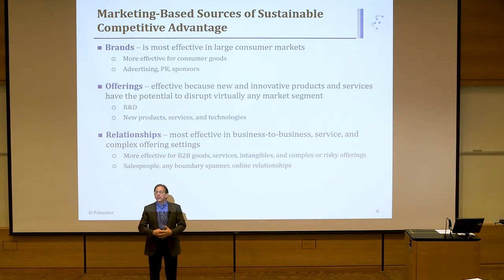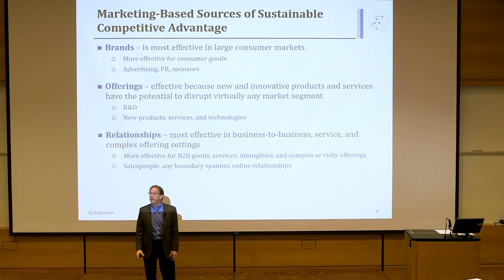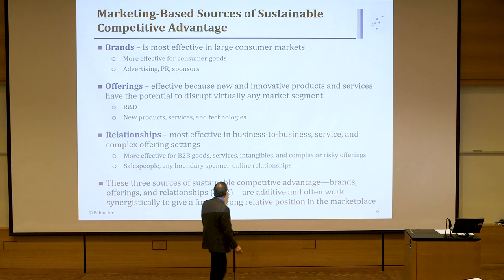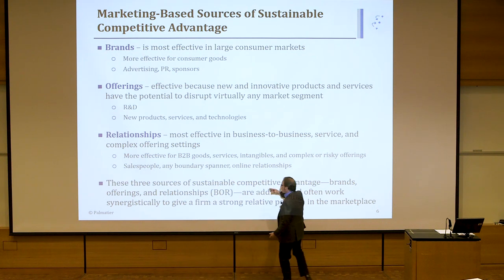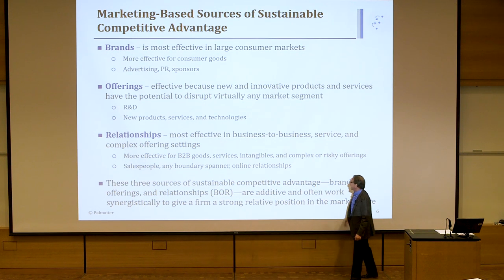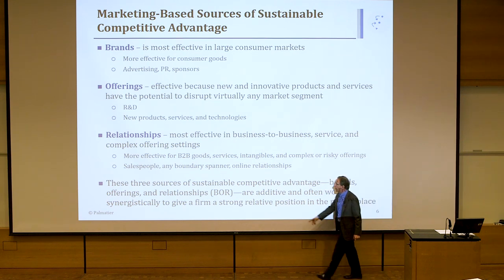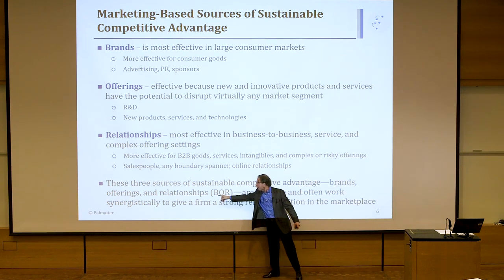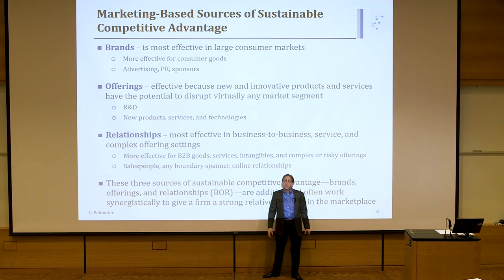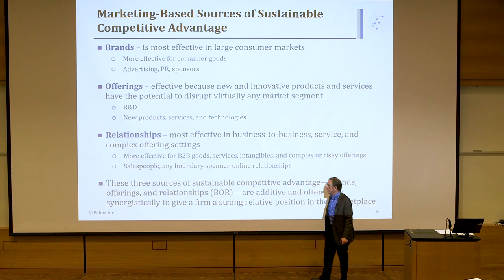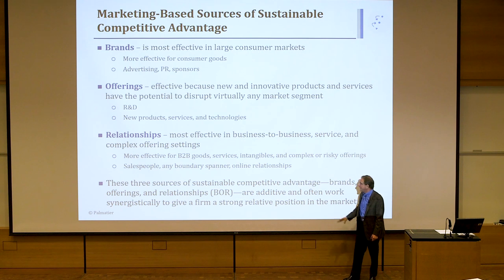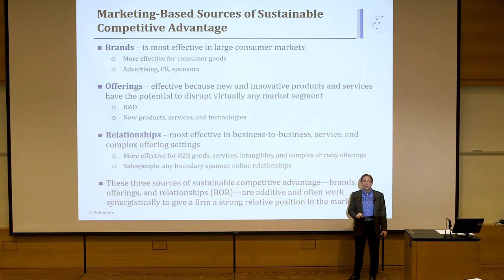In consumer goods, you often use brands. Why? Because there are so many consumers out there, it's too hard to develop an individual relationship with each one of them. Overall, the three sources of sustainable competitive advantage — brands, offering, relationship — we give it an acronym we call BOR: brand, offering, relationship. This is where we spend most of our money in marketing — building brands, offering, and relationship. But recognize, good firms don't just use one of these as a sustainable competitive advantage; they bundle multiple components.